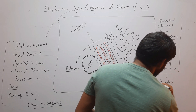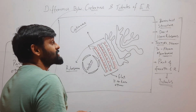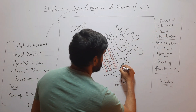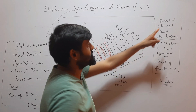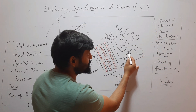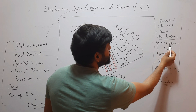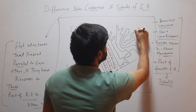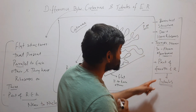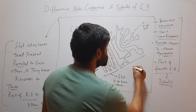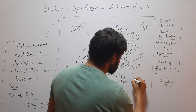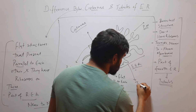Here in this diagram, you can see that the structure which is branched — this structure is branched and it doesn't have ribosomes. Ribosomes are not present there. It is nearer to the plasma membrane and it is part of smooth endoplasmic reticulum. These structures are called tubules.